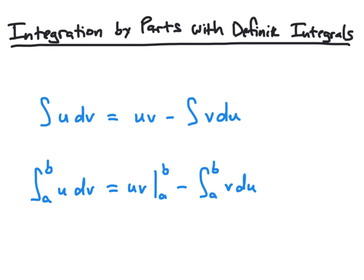If we have a definite integral of the same form, such as the integral from a to b of u dv, then we can use the exact same integration by parts formula, just evaluated at our limits. So we have uv evaluated from a to b minus the integral of v du evaluated from a to b.